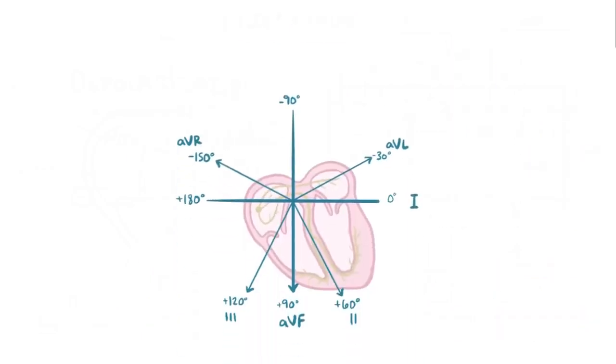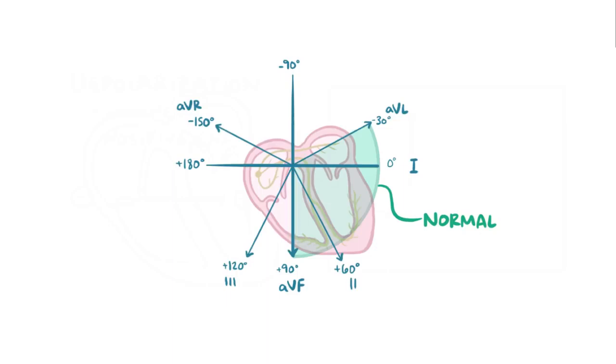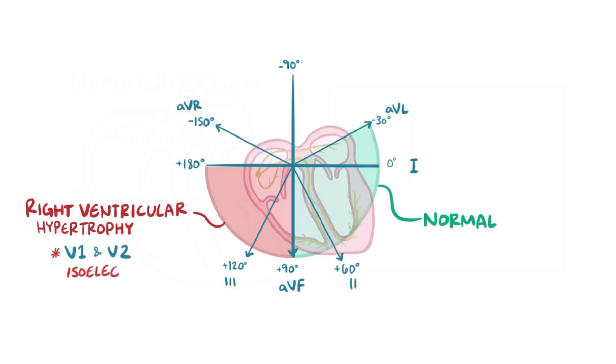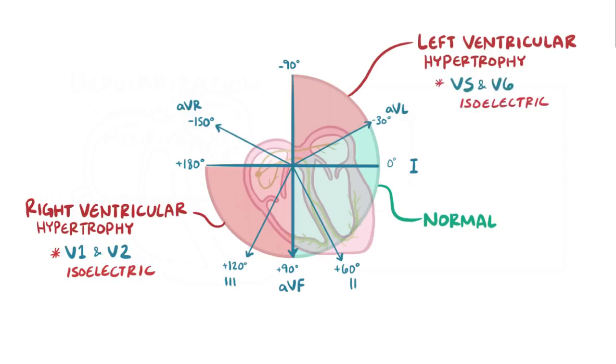Alright, as a quick recap, a normal heart axis is between negative 30 and plus 90 degrees. Right ventricular hypertrophy can cause the axis to be between plus 90 and plus 180 degrees, and can sometimes cause the V1 and V2 chest leads to appear isoelectric. Left ventricular hypertrophy can cause the axis to be between negative 30 and negative 90 degrees, and can sometimes cause the V5 and V6 chest leads to appear isoelectric.